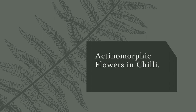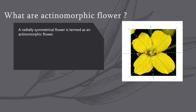Hello everyone. Today we are going to study about actinomorphic flowers, taking the example of a chilli flower. First, let us see what actinomorphic flowers are. A radially symmetrical flower is termed as an actinomorphic flower. Radially symmetrical means you can divide this flower into two equal parts by passing a plane through the center of the flower in any direction.